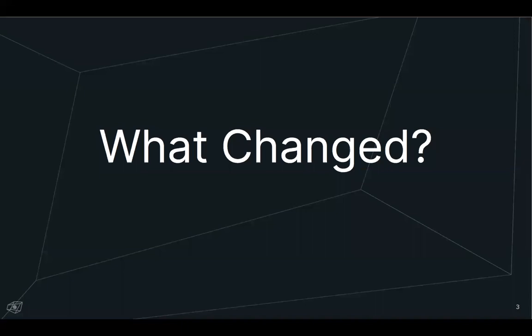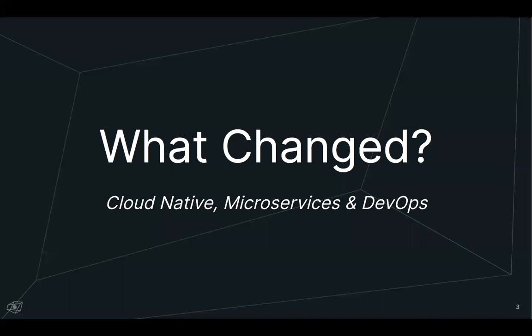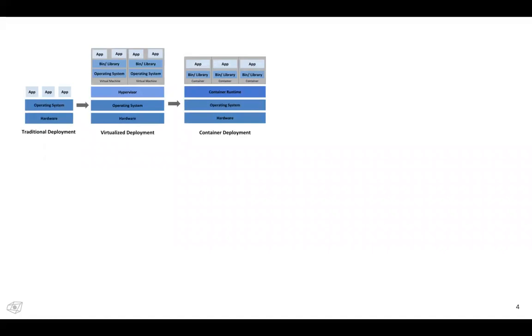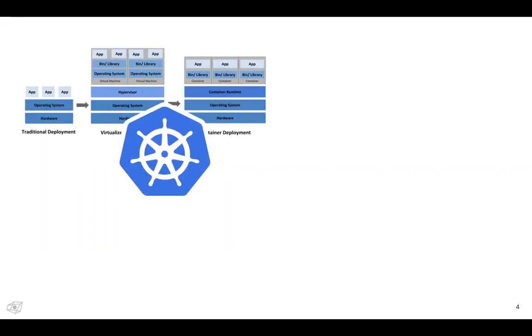To get started, I want to talk about what changed — specifically what changed in the way we work — and how these changes have led to a need for distributed tracing. Many organizations have adopted microservices or other loosely coupled architectures, and DevOps practices. There's been a series of technical changes: we moved from bare metal to virtual machines to containers to something like Kubernetes, which provides an orchestration layer on top. Each of these has provided new abstractions, hiding some implementation details, but also introducing additional complexity.